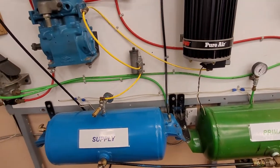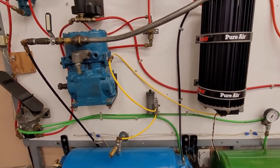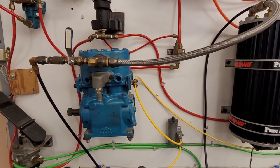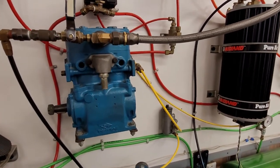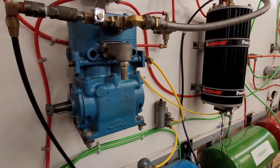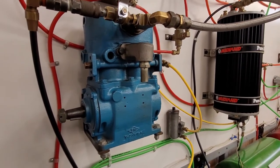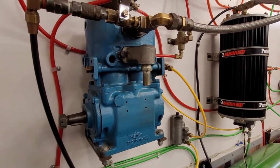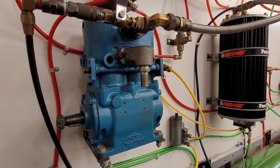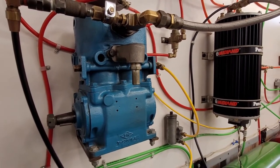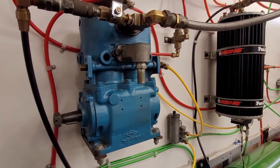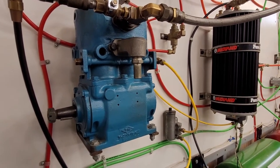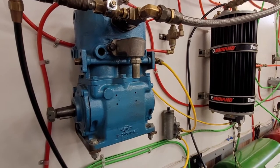We're going to start with the supply circuit. Our supply circuit consists of the following components: we have an air compressor which works the same as any air compressor does. Inside there's a piston that goes up and down. It's made to generate air. The compressor is bolted to the side of the engine, usually located on the driver's side, and it runs off gear drive with the engine.